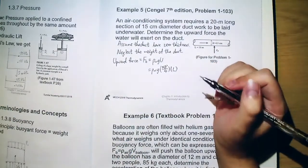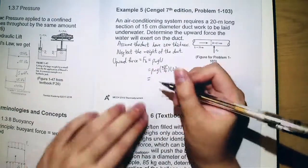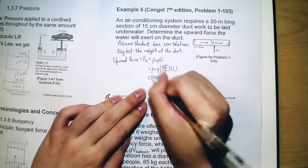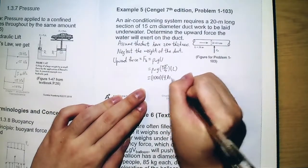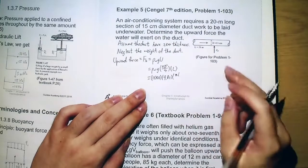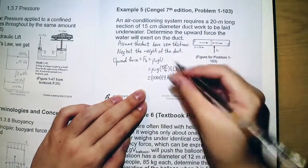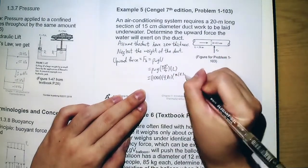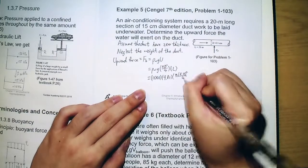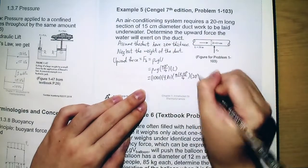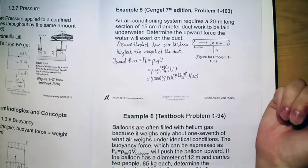The last thing is we substitute those values into this equation: π times, because it's 15 cm so we will convert it to 0.15, squared divided by 4, times 20, which would be the length of this duct.